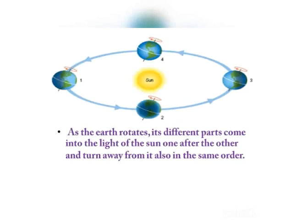From this activity, we have noticed that as the Earth rotates, its different parts come into the light of the Sun one after another and turn away from it also in the same order. This means the different parts of the Earth come in front of the Sun and move away from the Sun one by one.